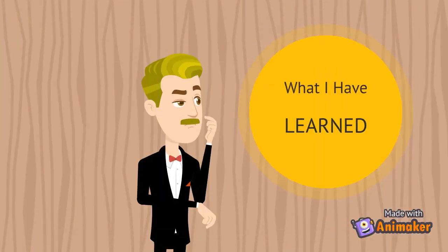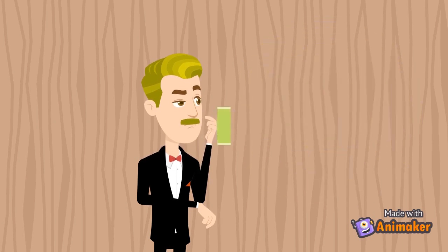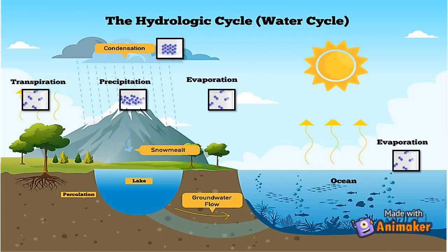What I have learned in this module. This is just an example — you can create and improve your own concept map. In the What Can I Do activity, you will illustrate the different phase changes in the water cycle. The water cycle is the hydrological cycle that describes the continuous movement of water on Earth.